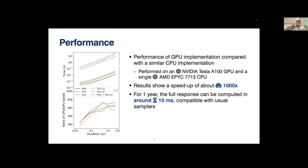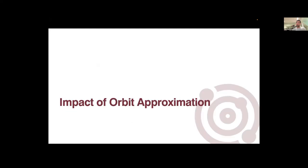What about performance? Comparing the GPU and CPU implementations, we see a speedup of about one thousand times. For one year of data, the full response function can be computed in around 10 milliseconds — which is compatible with the usual MCMC samplers.